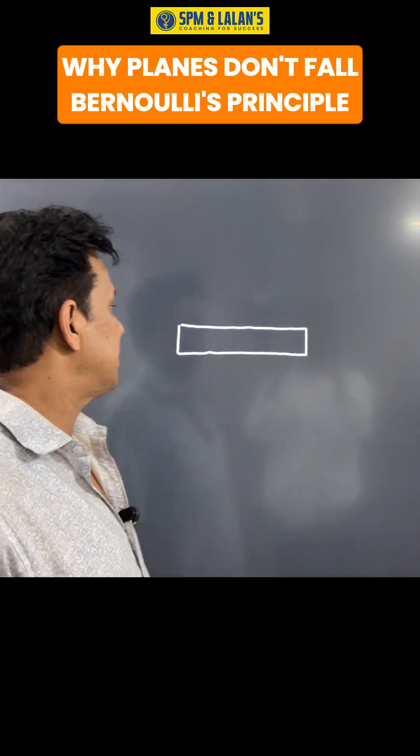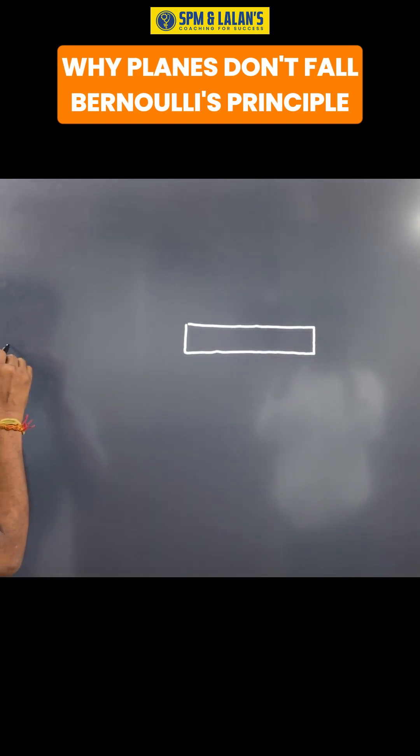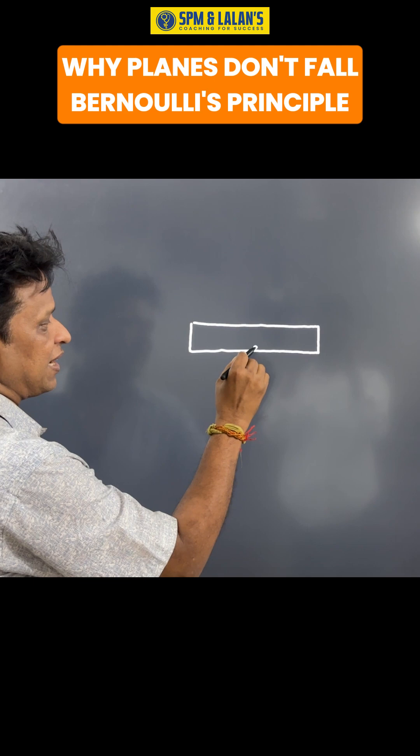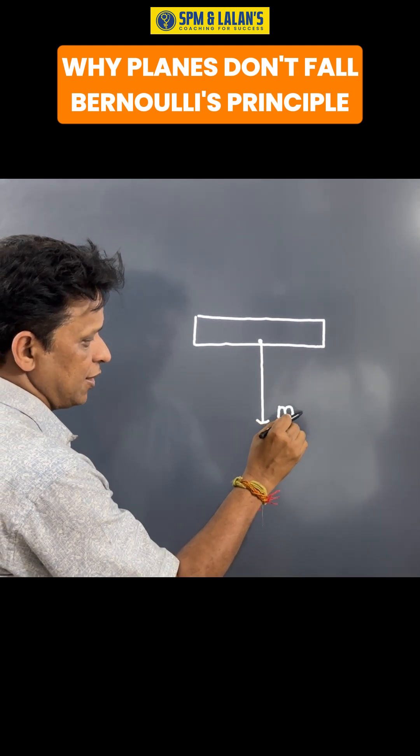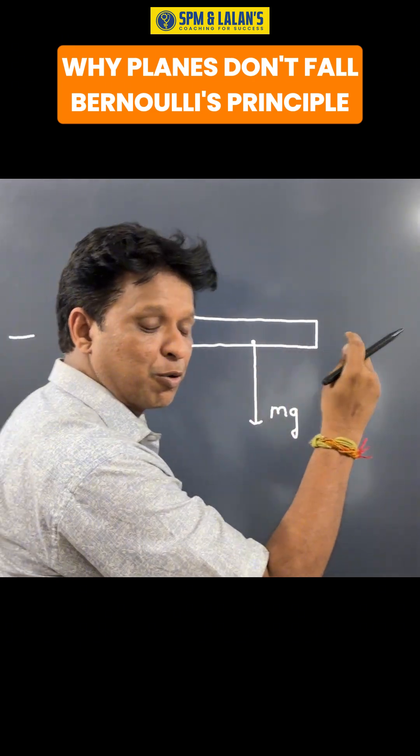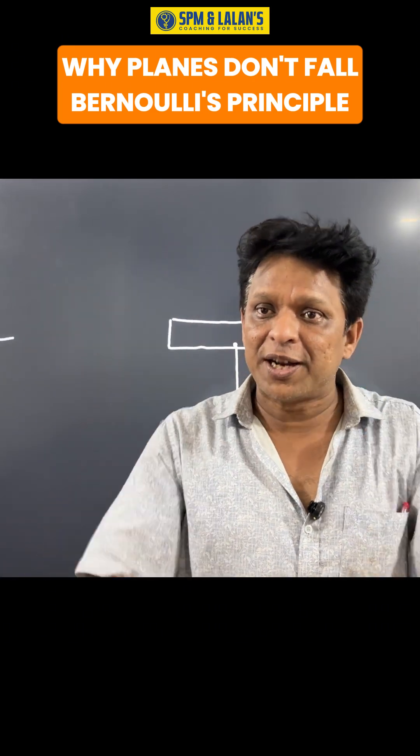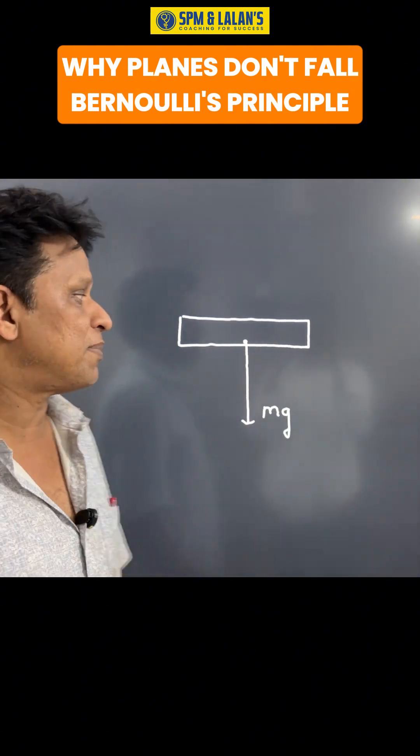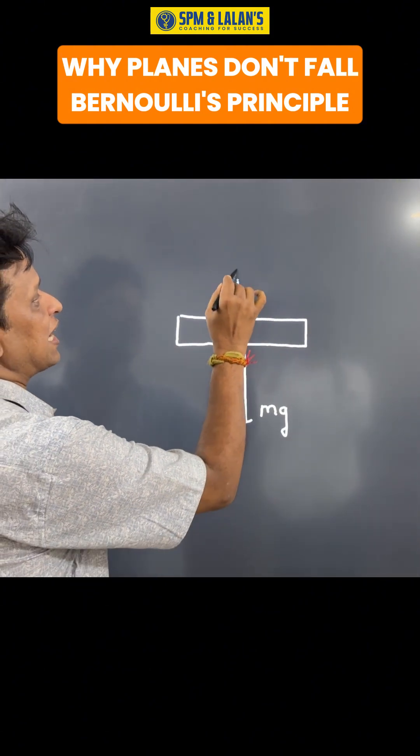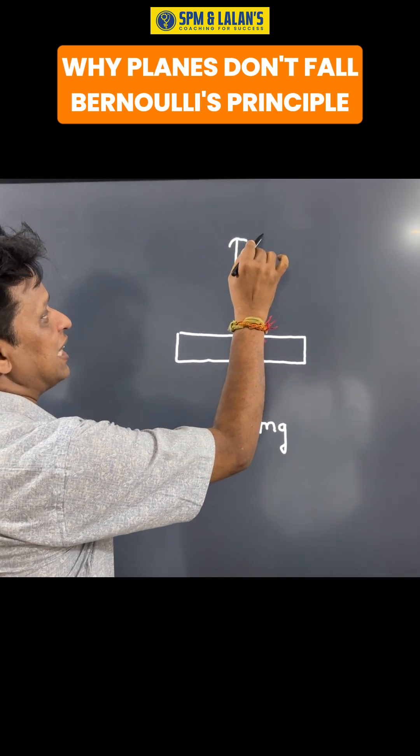For an airplane to remain in the air, we have to think about the forces. This is the airplane. Definitely, weight is acting in the vertically downward direction. If only weight acts downward, then the airplane will fall down. So under what condition will it remain in the air? There must be an equal and opposite force acting in the opposite direction. This is called upthrust.